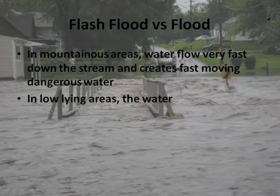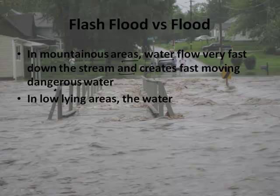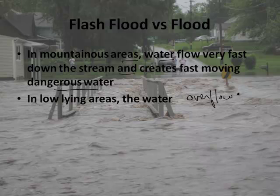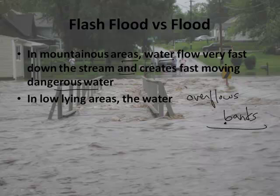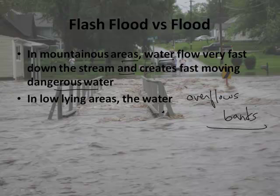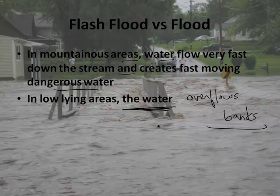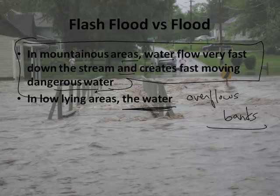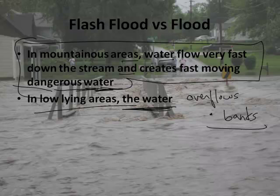Let's quickly talk about the difference between a flash flood and a flood. A flash flood happens in mountainous areas where water flows very fast down the stream, creating fast-moving dangerous water. In low-lying areas, the water essentially just overflows the banks — those are just called floods. Typically in the Midwest United States every spring, certain rivers overcome their banks. They predict it — they say the banks are going to overflow on such-and-such a day. They can actually predict that. Flash floods happen in a moment. They'll issue a flash flood warning, but they don't know exactly where it's going to happen. In a regular flood, it just overflows the banks in a low-lying or low-gradient stream.